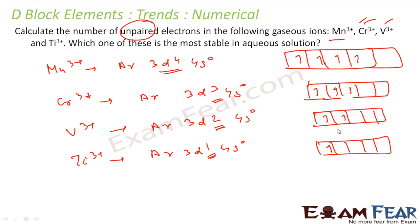Among these, Cr³⁺ is the most stable in aqueous solution because it has the t₂g³ stability factor, whereas the others lack such a stability factor.